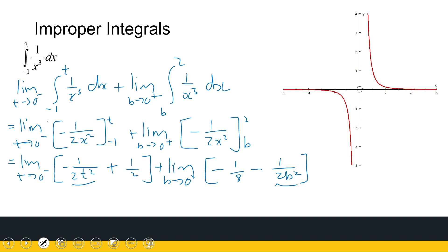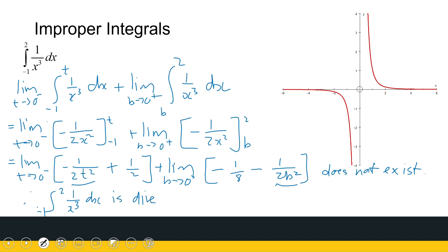So these limits do not exist — neither of them. Therefore, we can conclude that the integral from minus 1 to 2 of 1 over x cubed dx is divergent.